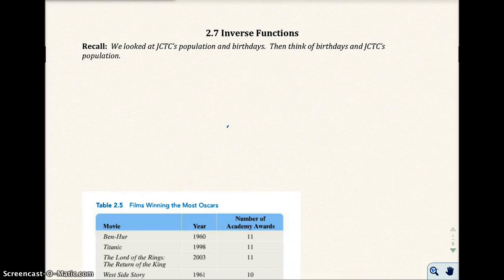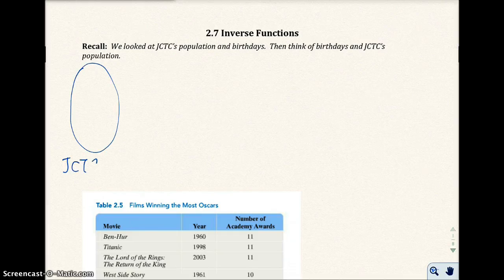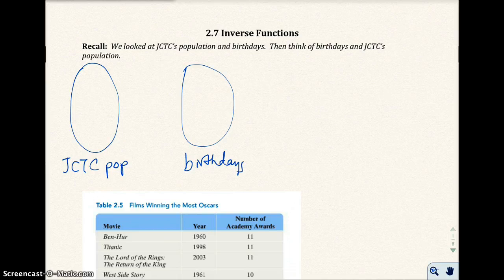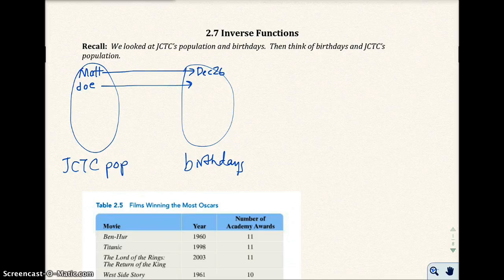This is section 2.7, and we're going to talk about inverse functions. Let's recall a problem that we looked at early in the chapter. We looked at JCTC's population and birthdays. We looked at a certain person — let's say we typed in a student's name. When we do that, we should only get one birthday out. If I typed in Joe, we would only get one birthday.